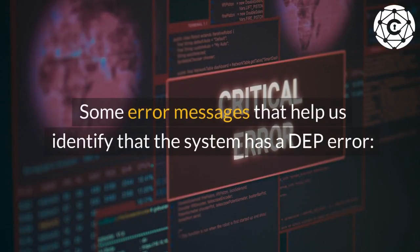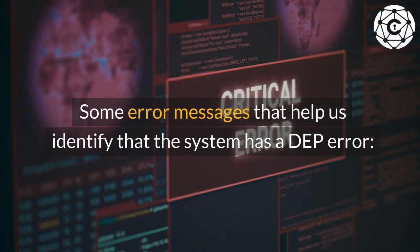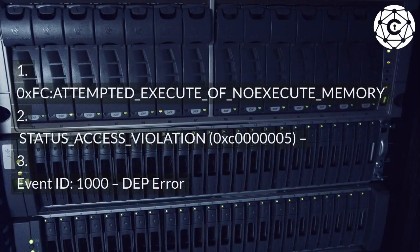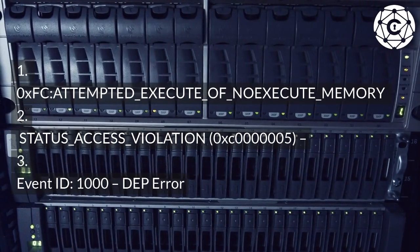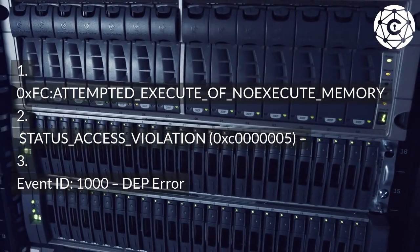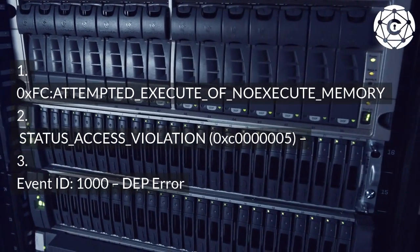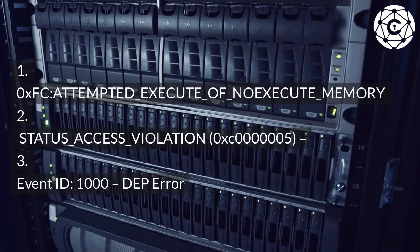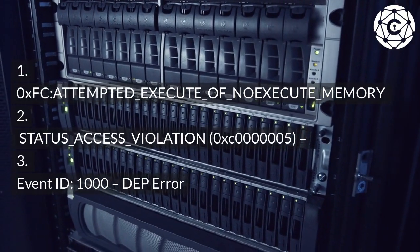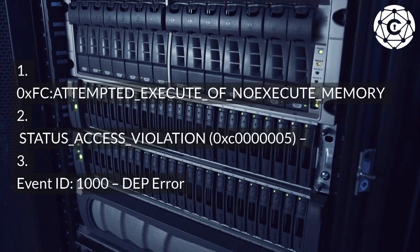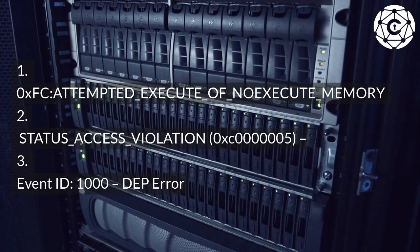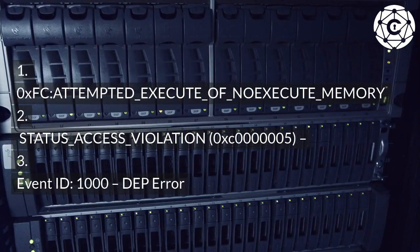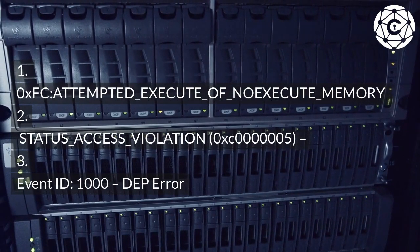Some error messages that help us identify that the system has a DEP error: 1. Hexadecimal FC — ATTEMPTED_EXECUTE_OF_NOEXECUTE_MEMORY. 2. STATUS_ACCESS_VIOLATION — 0xC0000005. 3. Event ID 1000 DEP Error.